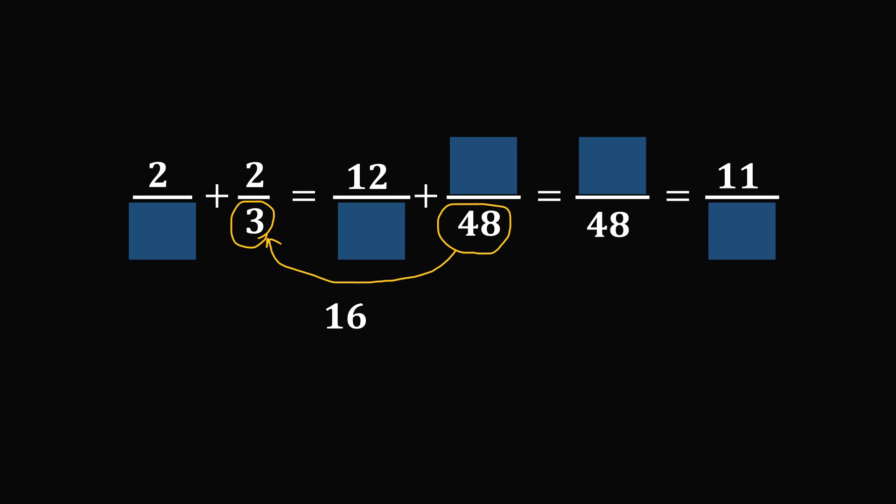In order to have an equivalent fraction, the numerator must also be scaled by the same factor. So this numerator has to be scaled by 16 from 2. So 2 multiplied by 16 is equal to 32.